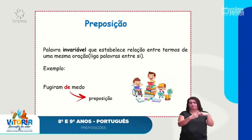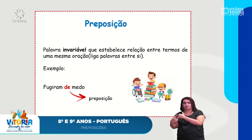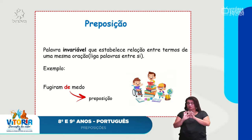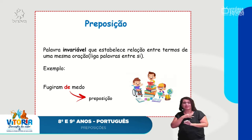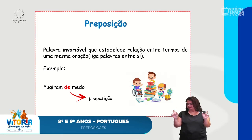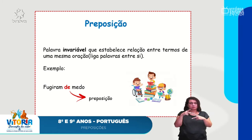Eles fugiram, mas como? Como foi que eles fugiram? Por que eles fugiram? A gente já sabe que eles estavam com medo. Então, esse 'de' serve para ligar essas palavras, complementando, nos ajudando a interpretar, a dar sentido à oração.